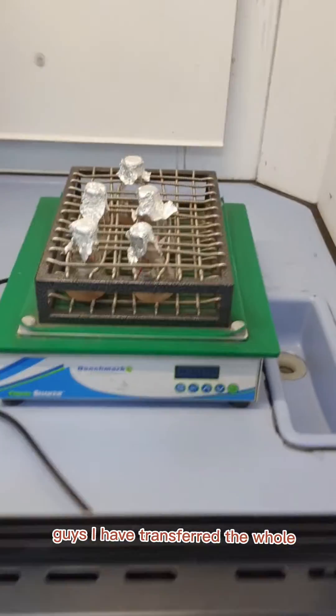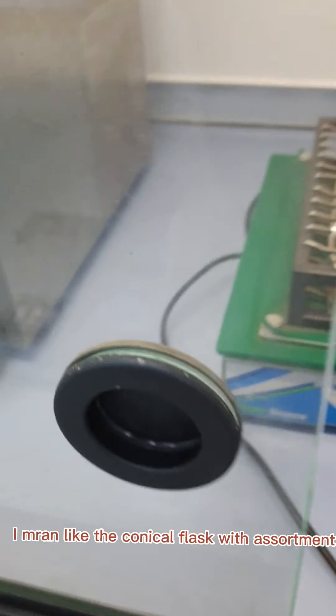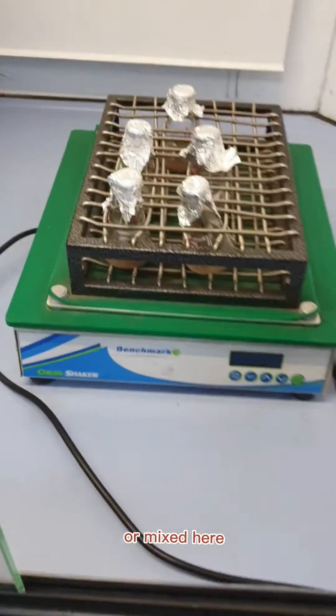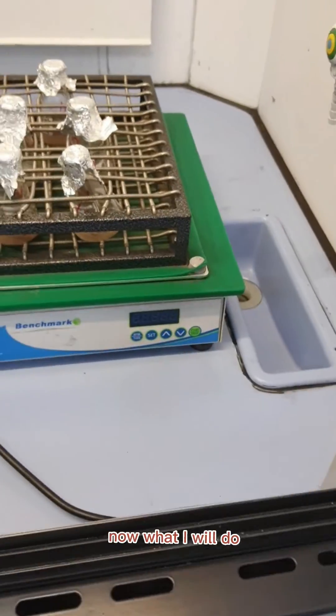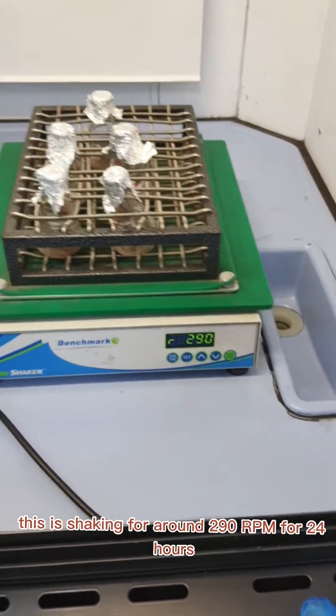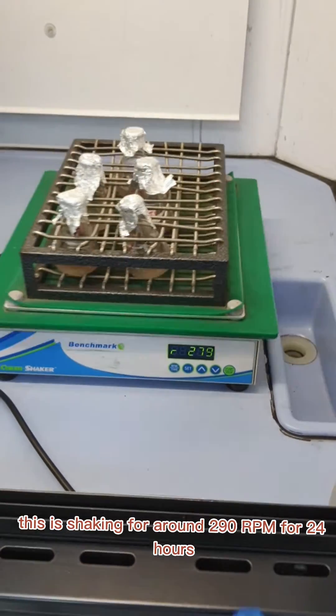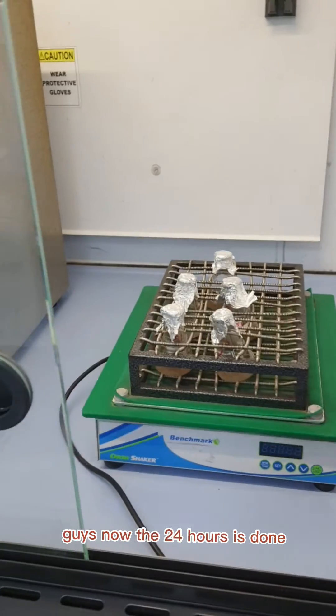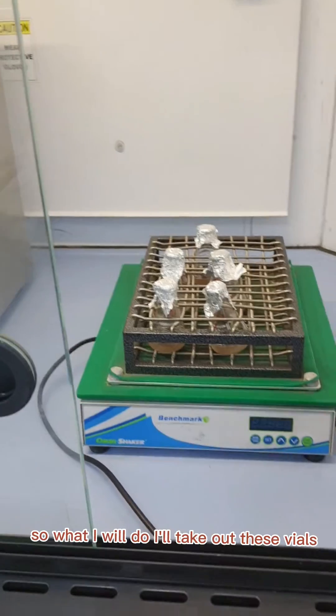I have transferred all the conical flasks with adsorbent mixed here. Now what I will do is start to shake. You can see here this is shaking at around 290 rpm for 24 hours.